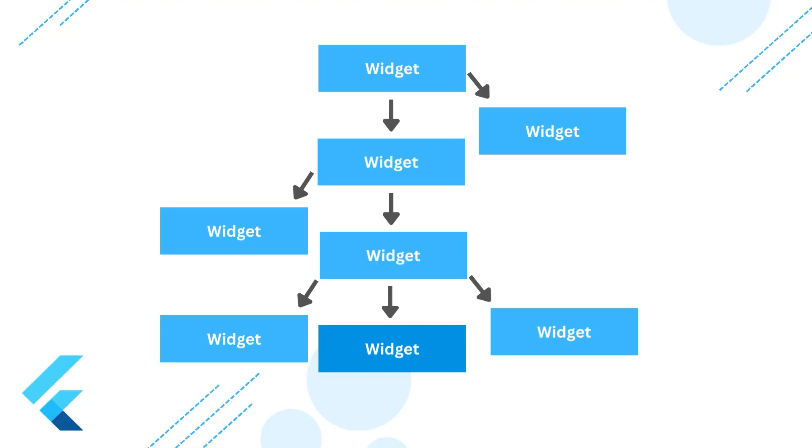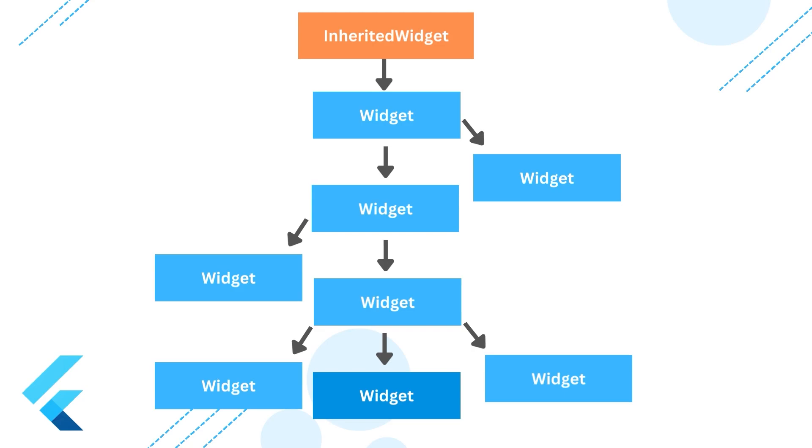Luckily, we have a widget called inherited widget, which can do exactly that for us without passing the data through all 5 nested child widgets. When you create this inherited widget at the top of your tree, you can get a reference to it from any widget down the tree. And this is why it's called inherited widget.